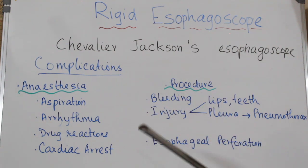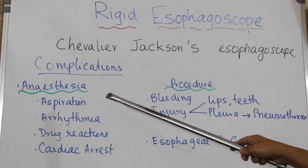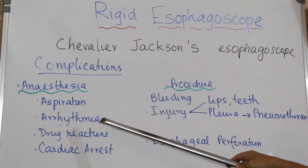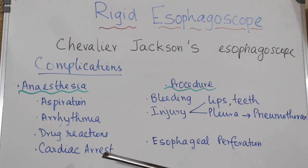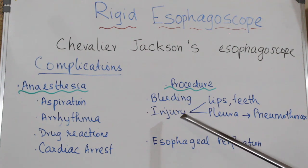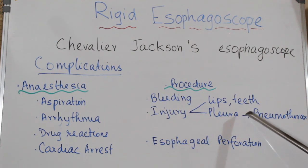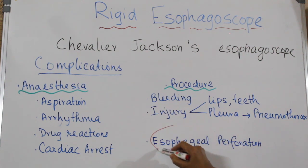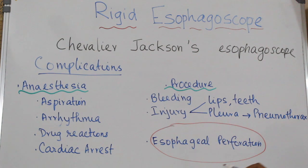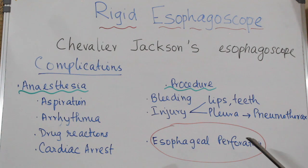Complications are divided into those due to anesthesia and those due to the procedure. Anesthesia complications include aspiration, arrhythmias, drug reactions, and cardiac arrest. Procedure complications include bleeding and injury — injury to the lips, teeth, or pleura leading to pneumothorax. The most dreaded complication is esophageal perforation. The cervical esophagus at the level of the cricopharynx is the most common site of esophageal perforation.